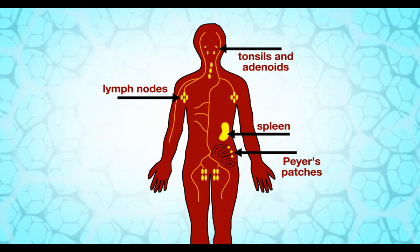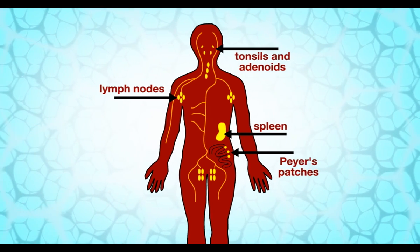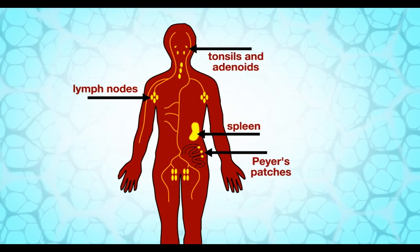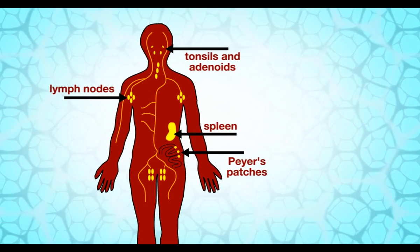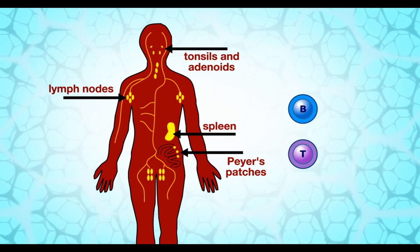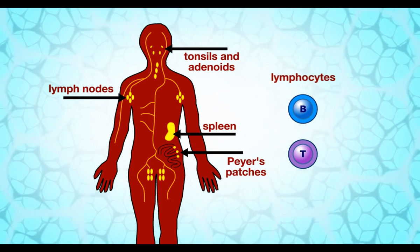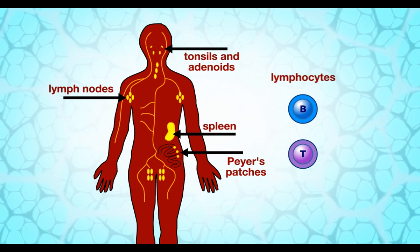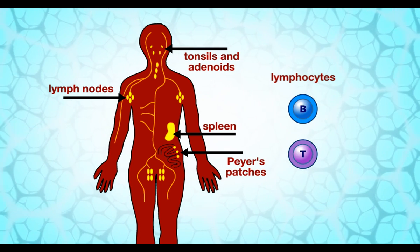These organs are rich in two types of specialized white blood cells called lymphocytes, also known as B cells and T cells. These lymphocytes are distributed in strategic sites throughout the body, ready to respond to antigens.